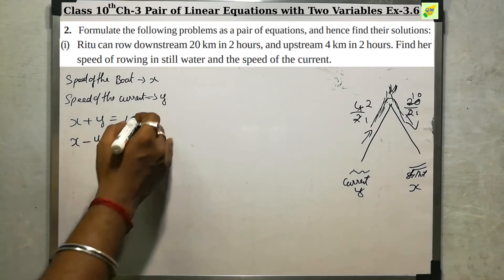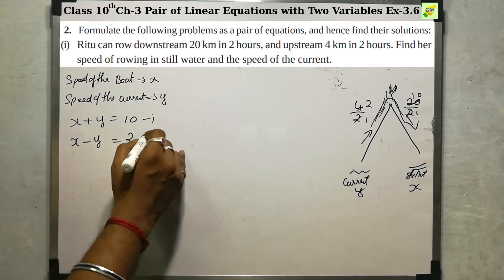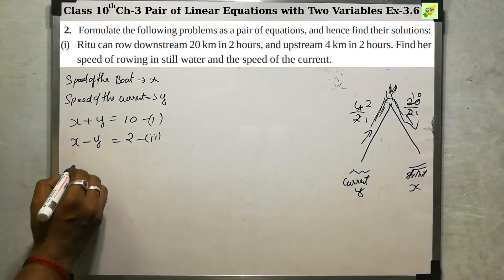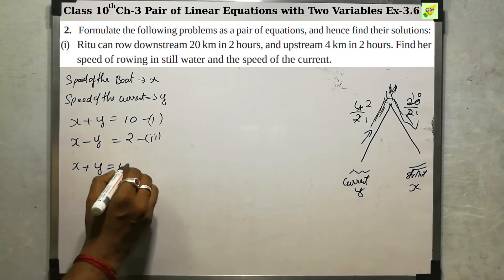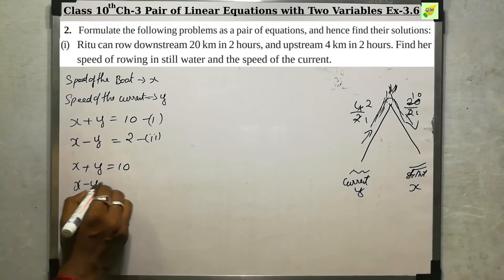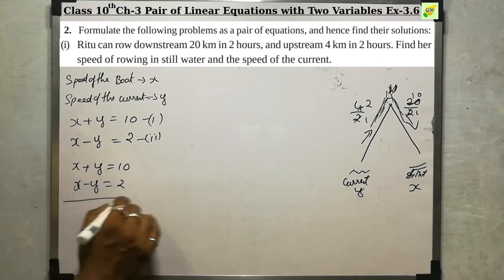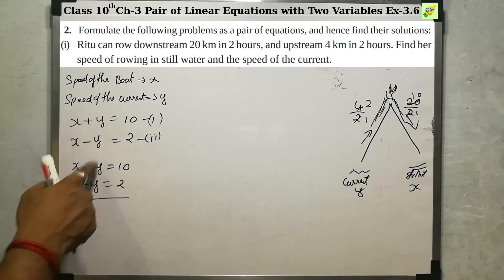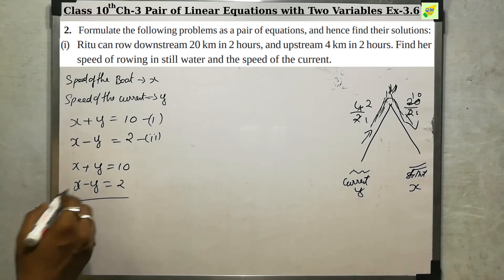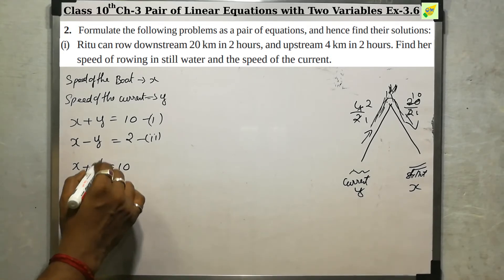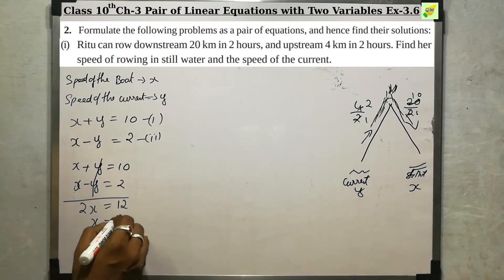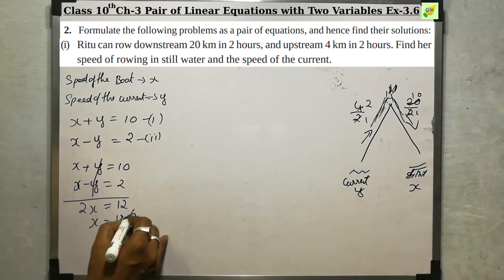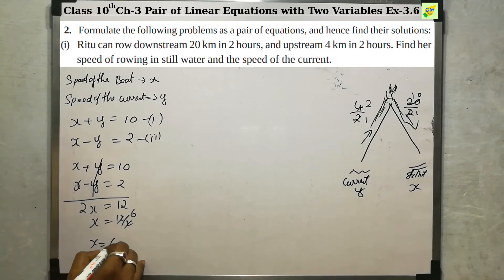Now let's take the two equations: x plus y equals 10 and x minus y equals 2. If we add both equations, y and negative y cancel out, giving 2x equals 12. So x equals 12 divided by 2, which is 6. That is, x equals 6.